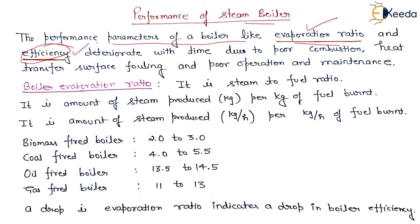As the time goes and as the boiler gets old, the efficiency and evaporation ratio will deteriorate. This happens because of poor combustion, heat transfer surface fouling, and poor operation and maintenance. So we have to maintain the boiler properly. These two are the indicators to calculate the performance of a steam boiler.